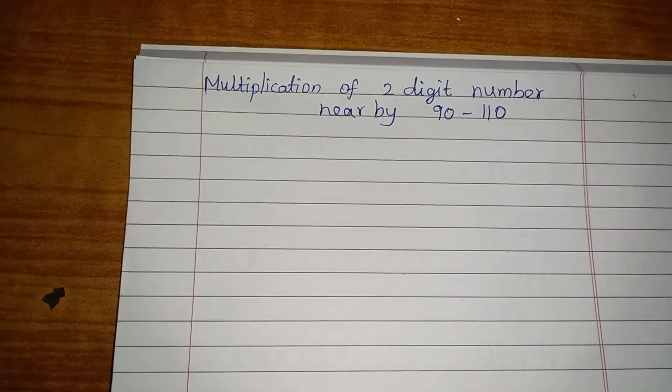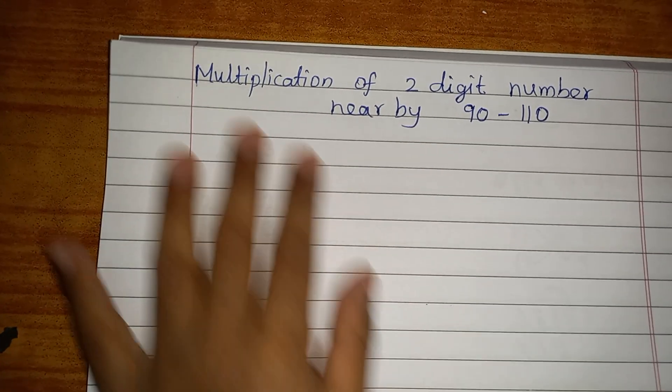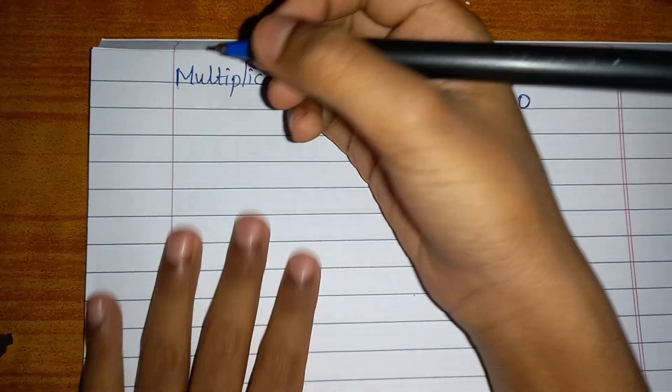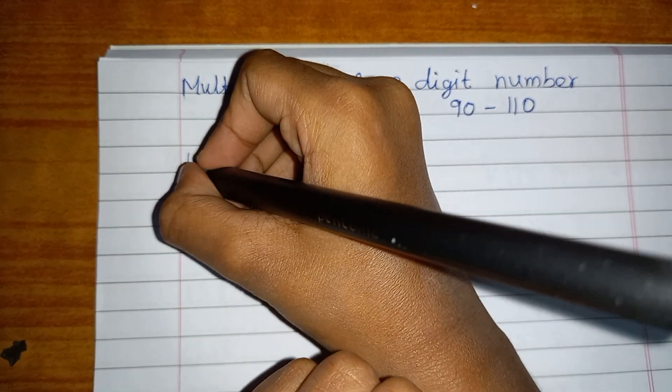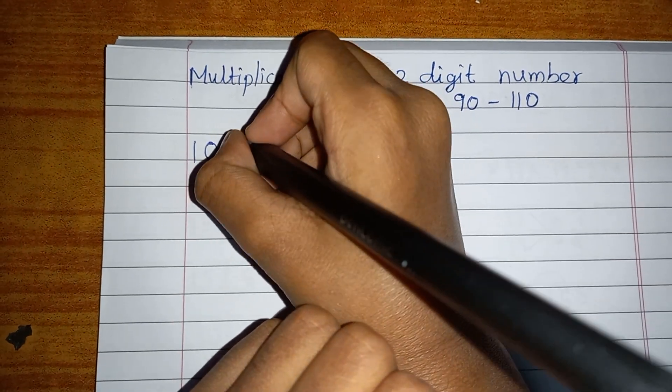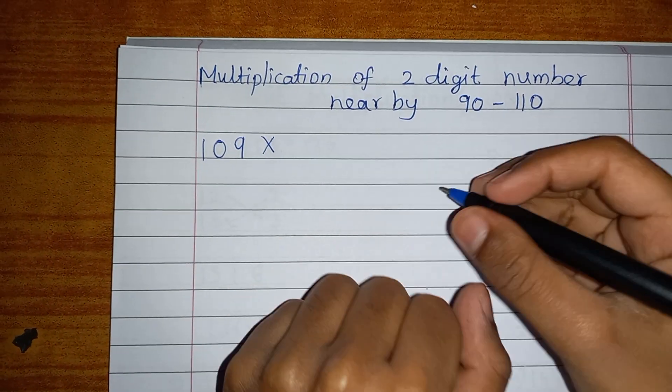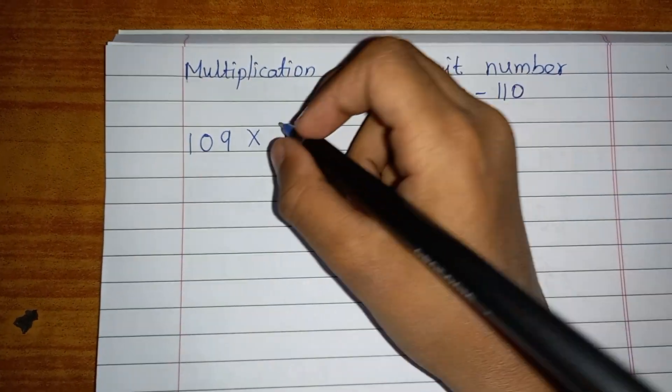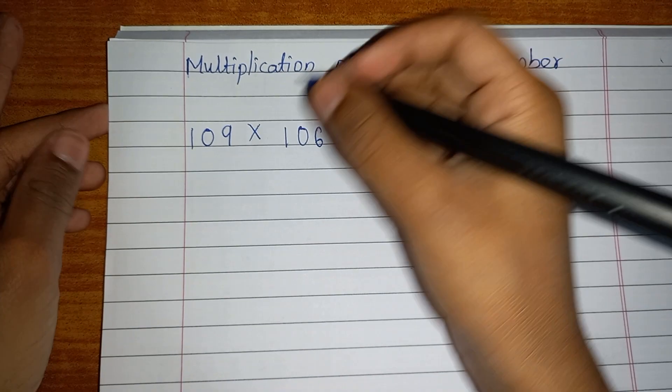But now we are going to see 90 to 110. Let's start. So first, let's go with an example which is going to be maybe 109 multiplied by 106. Let's see how we can do this. So first, you have to write...